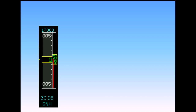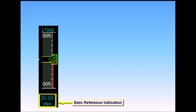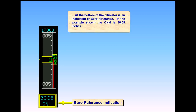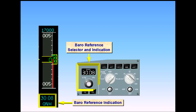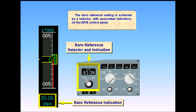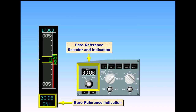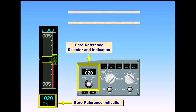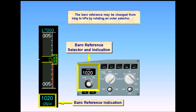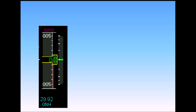At the bottom of the altimeter is an indication of barometric reference. In the example shown, the QNH is 30.08 inches. The barometric reference setting is achieved by a selector with associated indication on the EFIS control panel. The barometric reference may be changed from inches of mercury to hectopascals by rotating an outer selector. To look at the various other indications on the altitude and vertical speed scales, we will run through a typical flight profile.